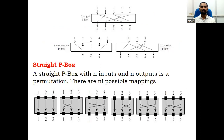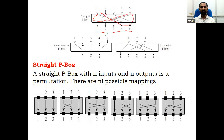This is a straight P-box example. If you take a straight P-box, it has five bits as input and it converts those five bits, producing an output of five bits. That's why we call it a straight P-box — it rearranges the bits. The property of a straight P-box is that it takes five bits input and produces five bits output.